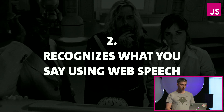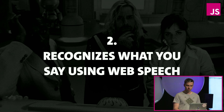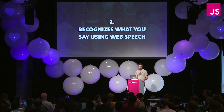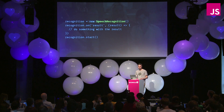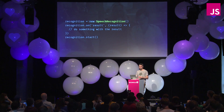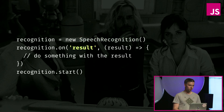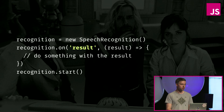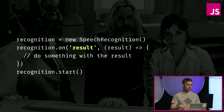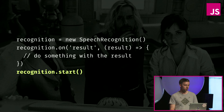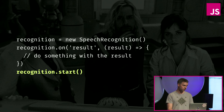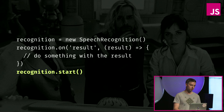Moving on to a bit more interesting part: speech recognition. It's done using the Web Speech Recognition API. Using it looks very similar to the code we've just seen. Again, you have to instantiate an object, wait for a result event which is triggered whenever speech recognition has some results, and finally call the start method that will ask for your mic and begin speech recognition.